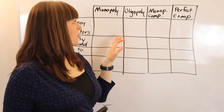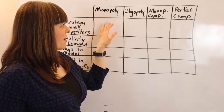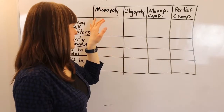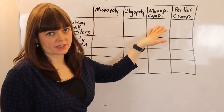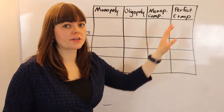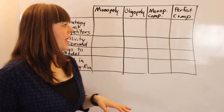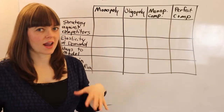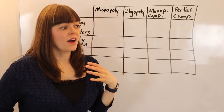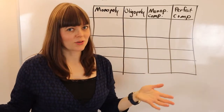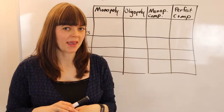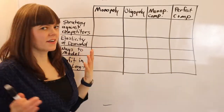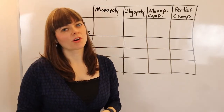In this video I'm going over the difference between four industry types: monopoly, oligopoly, monopolistic competition, and perfect competition. We're going to think about the differences, how we model them, how we use game theory and strategic behavior against competitors, the differences in elasticity of demand, and the profit differences.